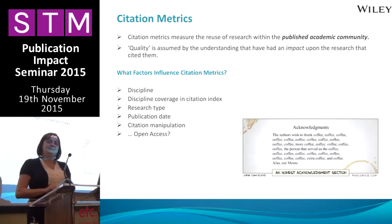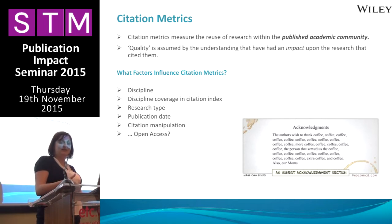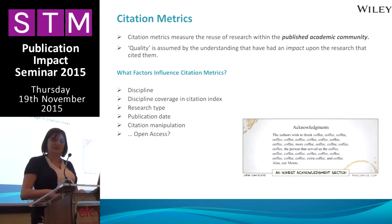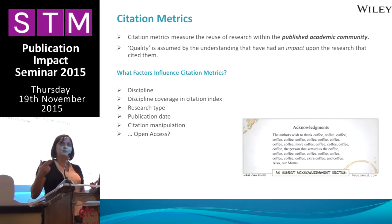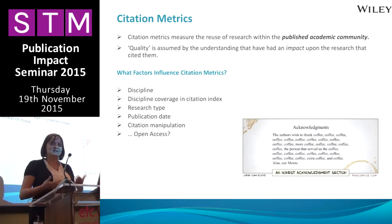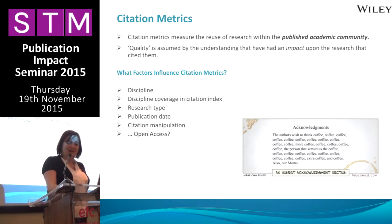You've also got to consider the discipline coverage in each citation index. Arts, humanities, and social sciences titles are quite underrepresented in the Web of Science, but much more evenly represented in Scopus. So you've got to consider which database to select when looking at those disciplines. Also, research type: review papers receive far more citations than standard articles, and that doesn't tend to be taken much into account. If you go into the journal citation reports, nine times out of ten you'll notice the top-ranking journal is a review journal.